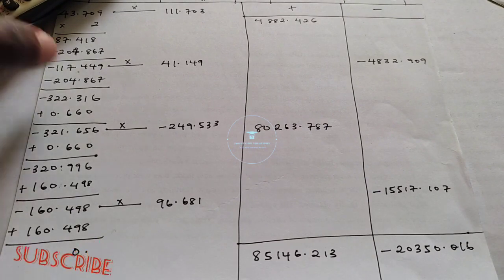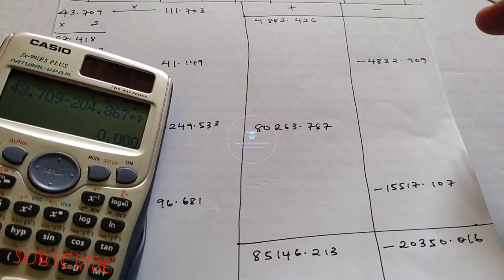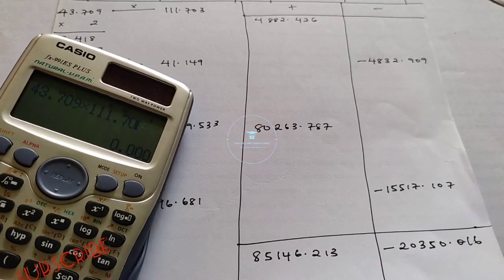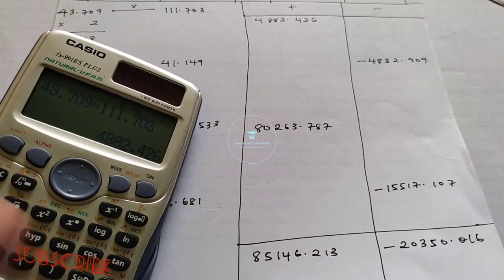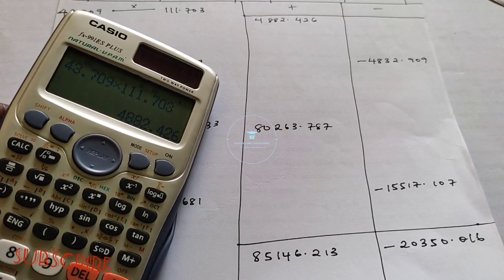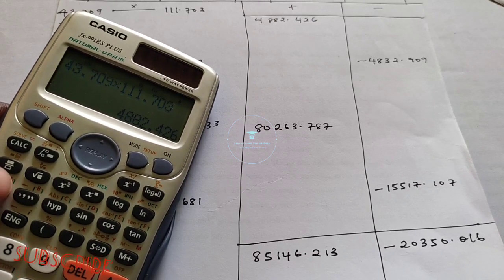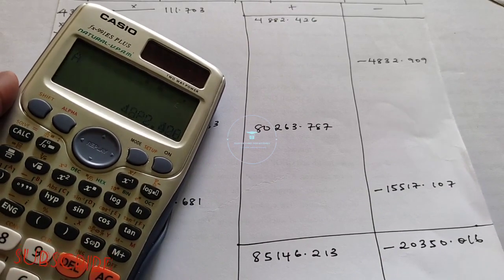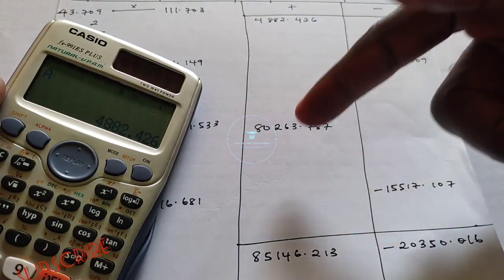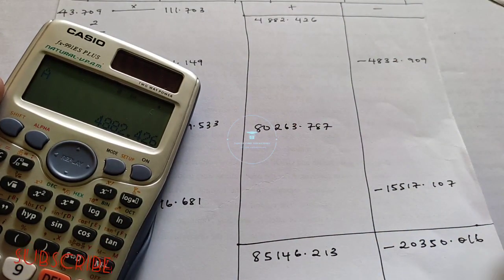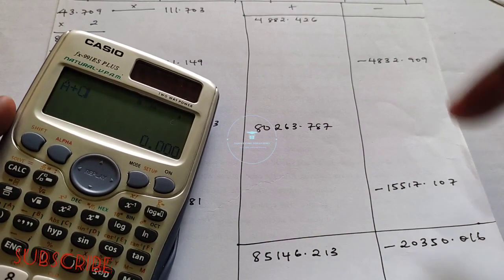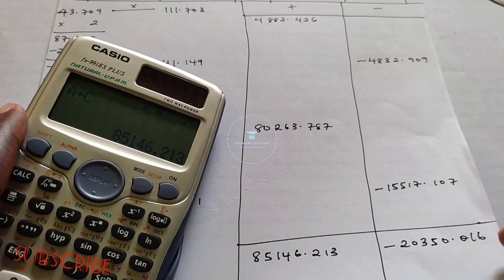I advise you to store the products on your calculator. For example, the first one: 43.709 multiplied by 111.703 gives 4882.426. Press Shift then Recall and choose a letter to store it — say, store it as A. Store your second product as B, third as C, fourth as D. So A and C are your positive products. You can then calculate Alpha A plus Alpha C to get the sum of positives: 8516.213.